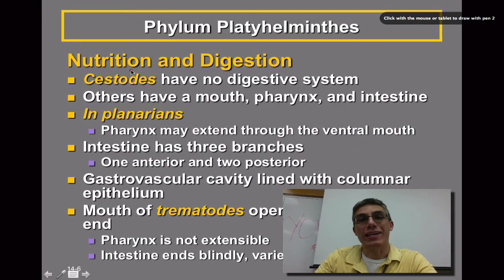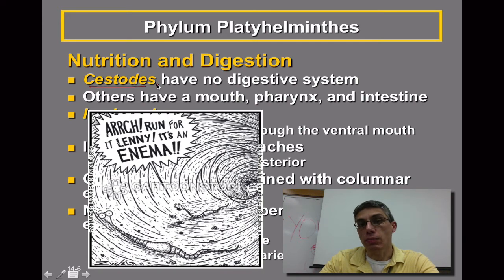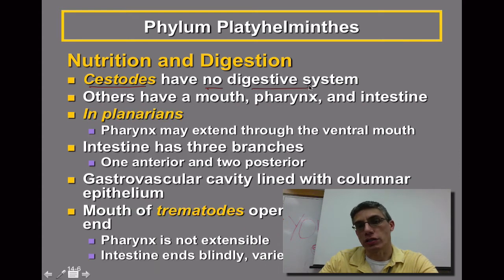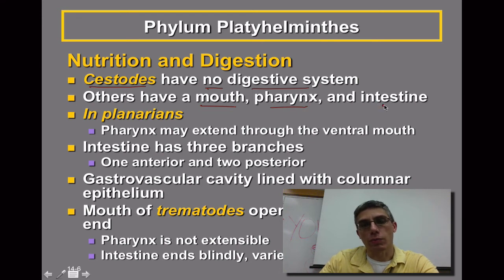When talking about nutrition and digestion in phylum Platyhelminthes, it is quite varied across this group. The cestodes, represented by the tapeworms, basically have no digestive system — it's not necessary because they live within another animal, which does the digesting for them. The others definitely have a very well-defined mouth, a pharynx, and a well-defined intestine.